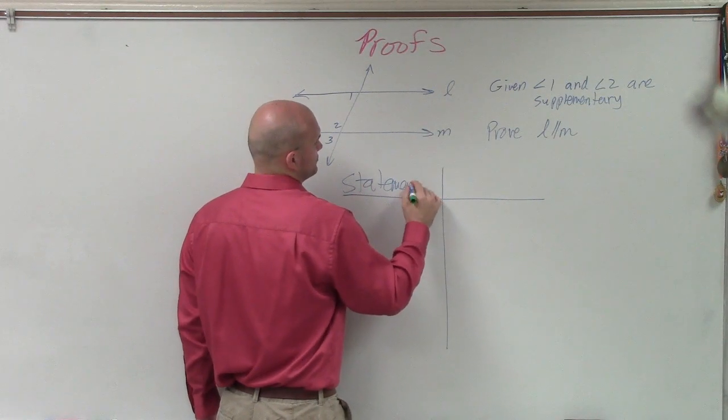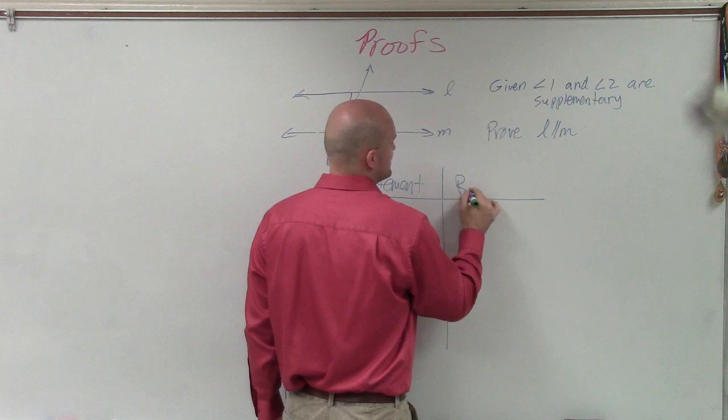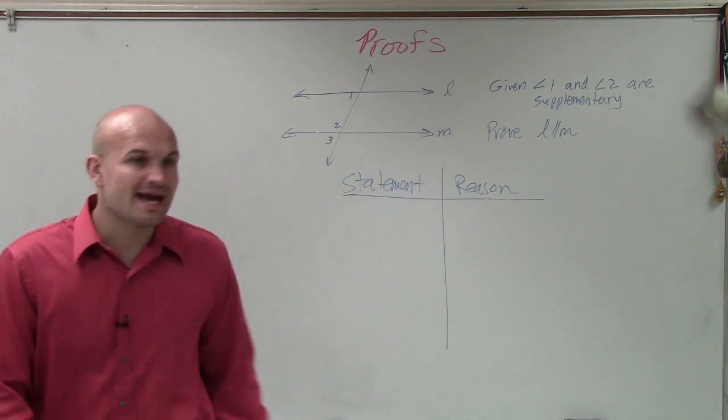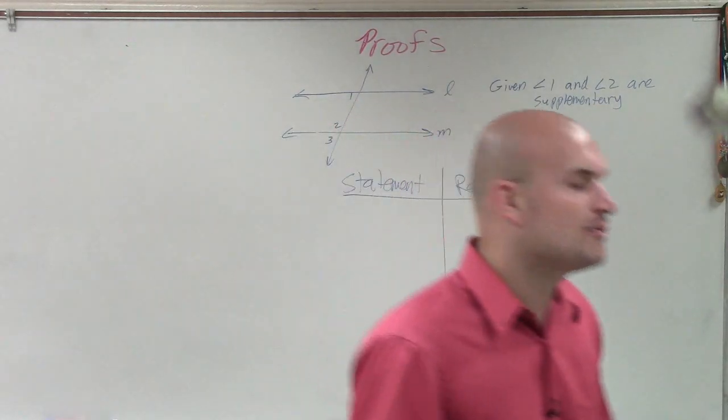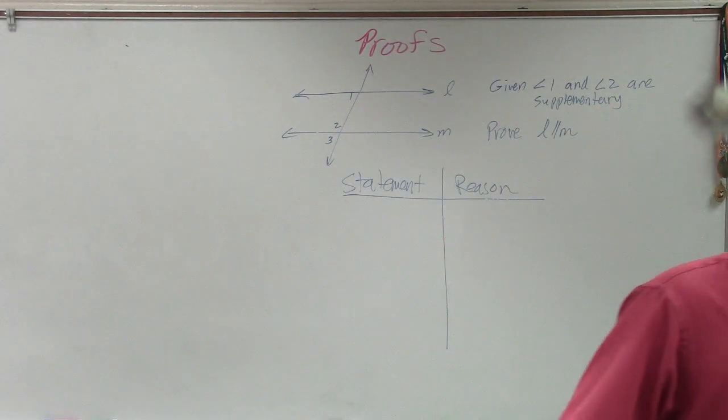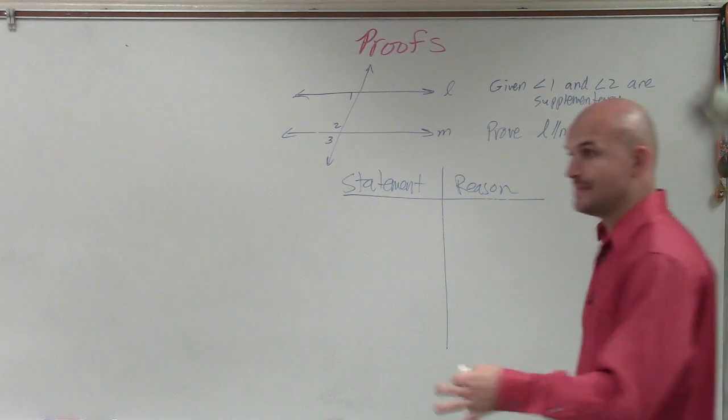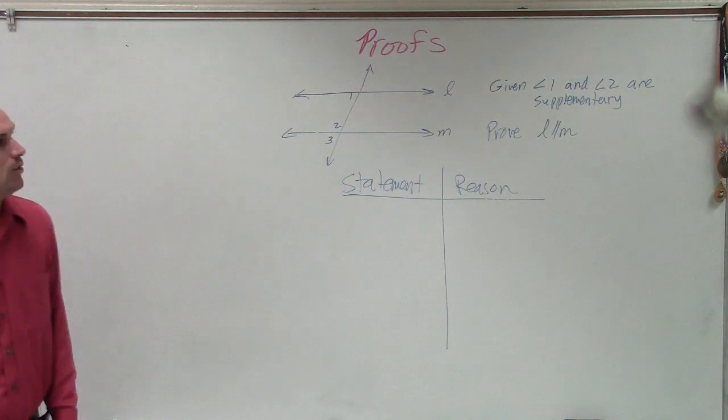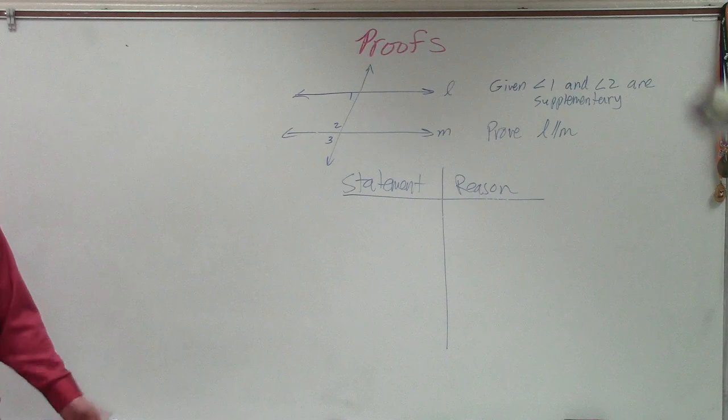So we'll call this a statement. And here we have a reason. So again, the best thing that we want to do when we're creating our proofs is write down our statements that were provided, the statements that we are given. And they tell us that the measure of angle one and angle two are supplementary.